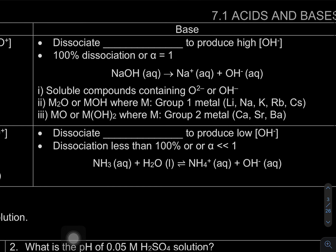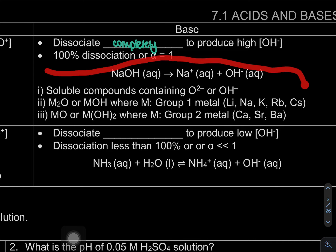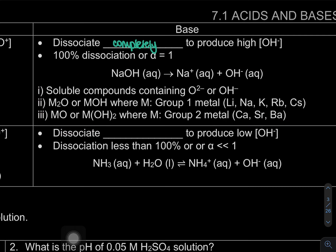Similarly for bases: a strong base dissociates completely to produce OH⁻. Here are a few examples of how to determine what is actually a strong base.